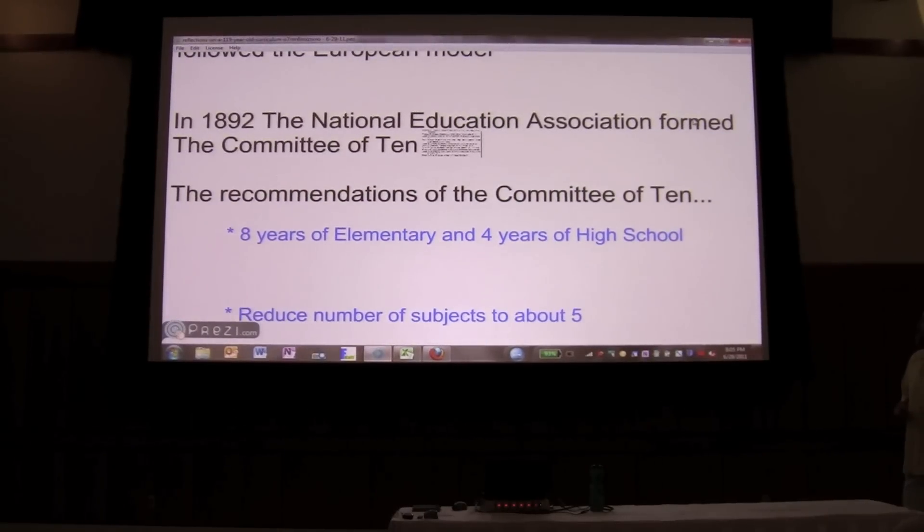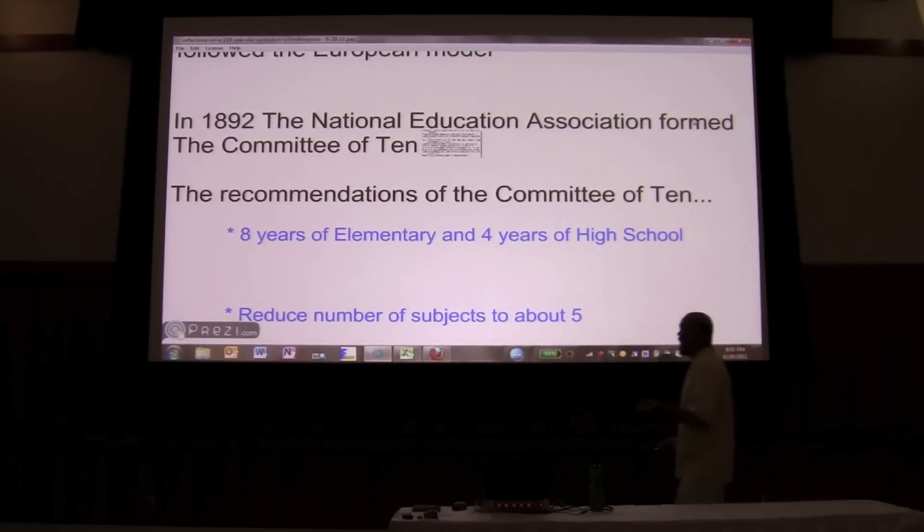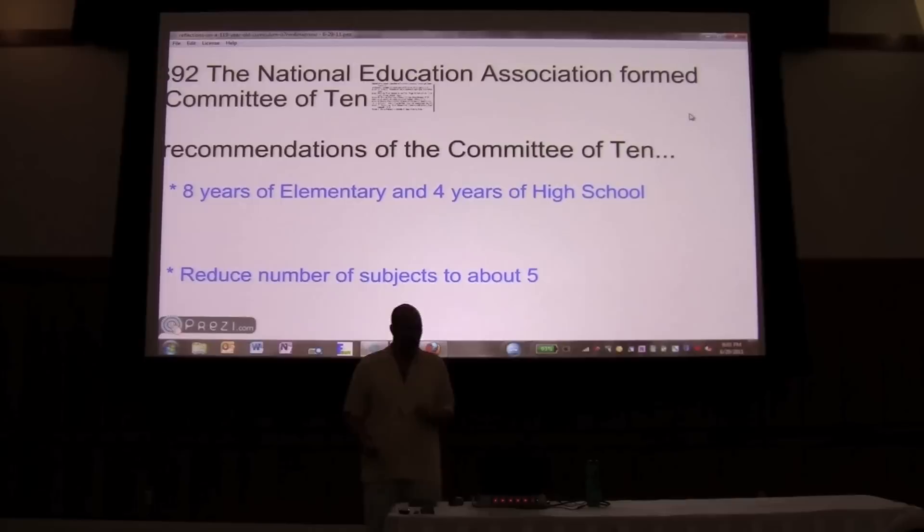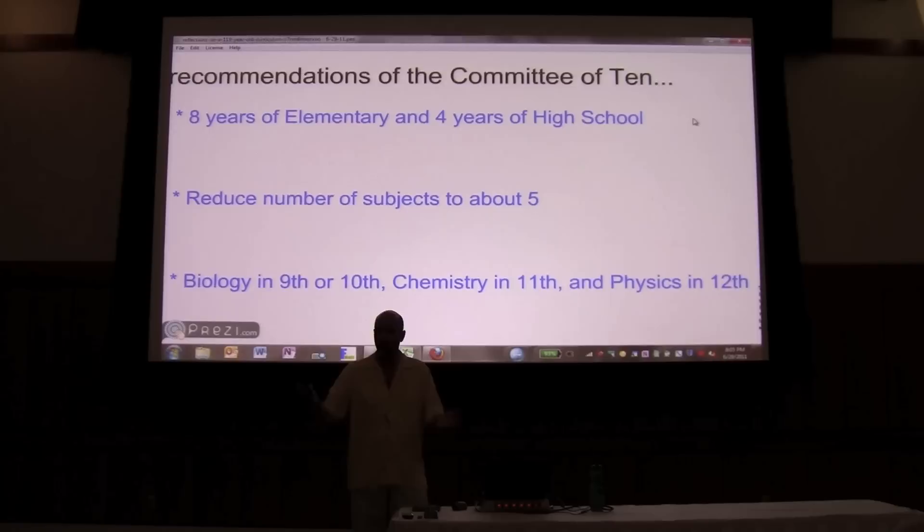And so they made the following recommendations. And this is where we mostly deviated and the United States became different than the rest of the world in some of our nuances. That eight years of elementary and then four years of high school. To reduce the number of subjects to just five, less is more. I'm not saying these are good or bad, I'm just saying this is where our educational system came from.